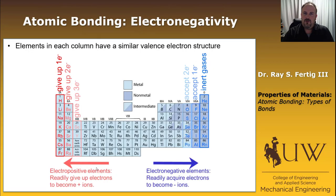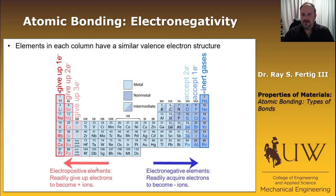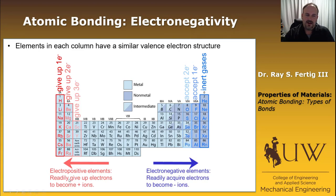Before we talk about ionic and covalent bonds, we need to talk about electronegativity. What I'm showing you here is a periodic table, and the elements in each column have a similar valence electron structure. Elements on the left-hand side are called electropositive, and they typically give up electrons to become positive ions. In the example we just had with hydrogen and fluorine, the hydrogen was the positive ion compared to the fluorine, which was negative. On the right-hand side of the table, we have electronegative elements, and they readily acquire electrons to become negative ions.